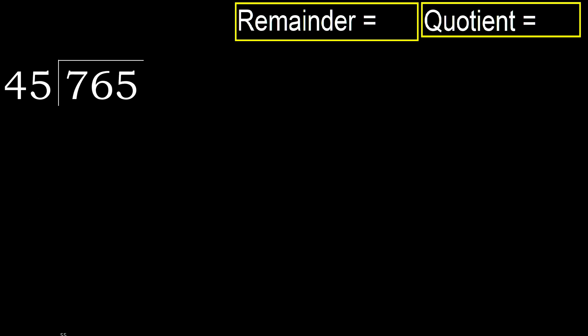765 divided by 45. 7 is less, therefore next. 76 is not less, therefore we work with 76. 45 multiplied by which number is nearest to 76, but not greater?